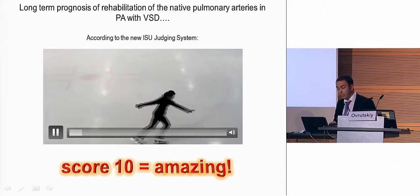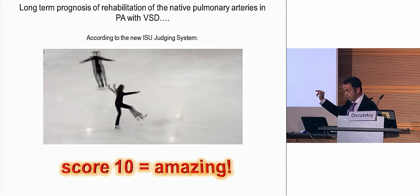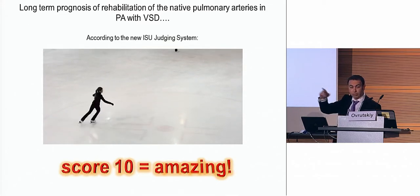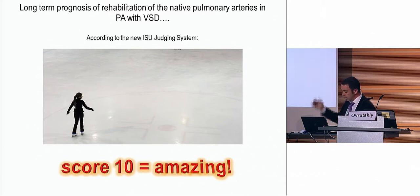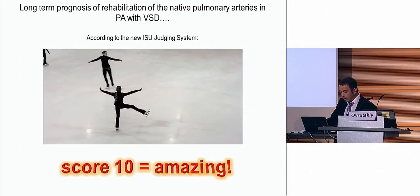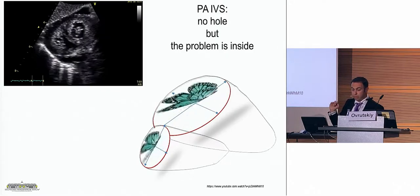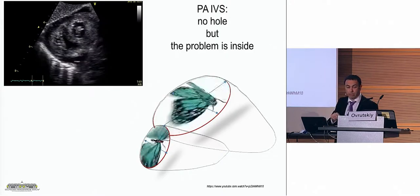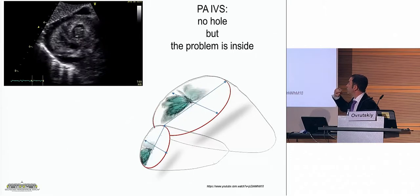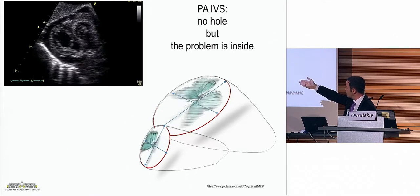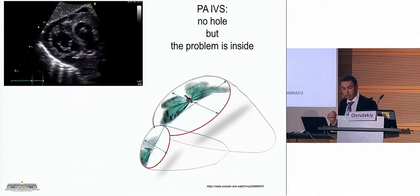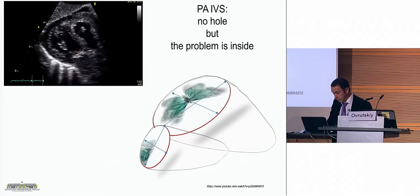In one patient — this young girl — according to the new scoring system it was 6.0, but if you know figure skating it is now up to 10. I would say the score is 10 — it is amazing for pulmonary atresia with VSD. But what about pulmonary atresia without VSD? There is no hole but the problem is inside the heart: a very small tricuspid valve visible on the echo sample, and a very small, bipartite right ventricle. Can it really grow after therapy, and how can we measure it?